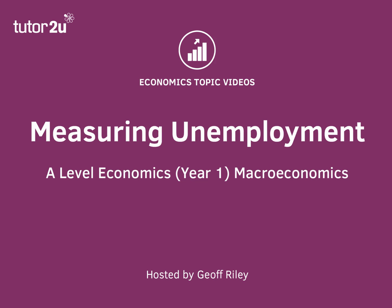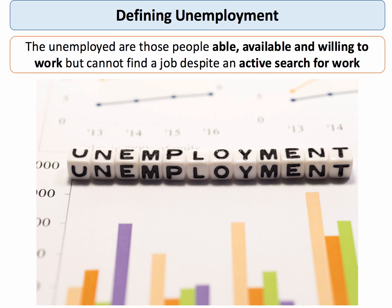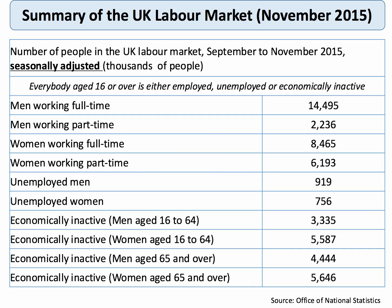Hello again and welcome to a topic video looking at the definition of and the measurement of unemployment, with a particular focus on the British economy. One definition of unemployment is that they are people who are able, available and willing to find paid work but who cannot find a job despite an active search for work. This table shows a summary of the UK labour market in the autumn of 2015, and if we read midway down the table we find that there were approximately 1.6 million unemployed men and women in November 2015.